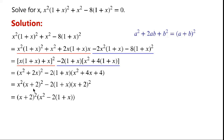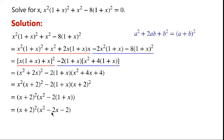We can see that the two terms have a common factor (x plus 2) squared. So we can now write equals (x plus 2) squared times (x squared minus 2 times (1 plus x)). This equals minus 2 or squared, minus 2. So the original equation can now be written as (x plus 2) squared times (x squared minus 2) squared times (x squared minus 2) equals 0.